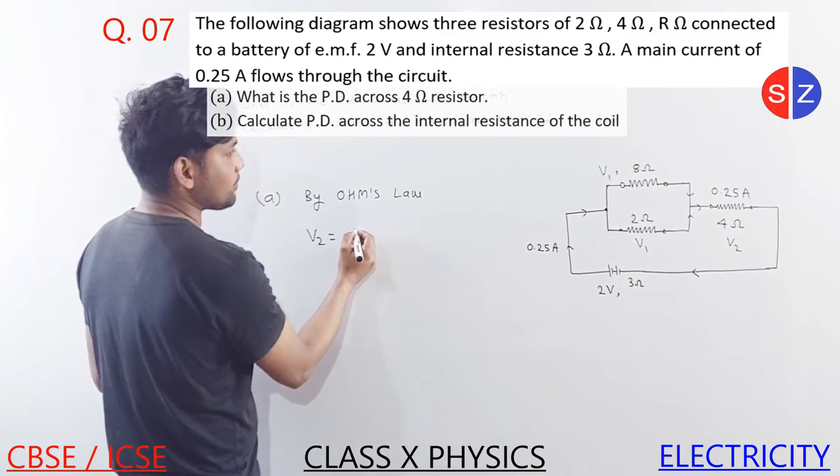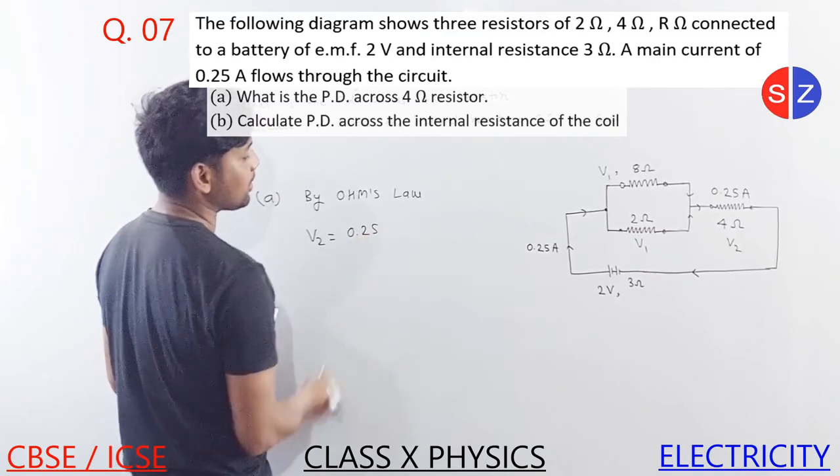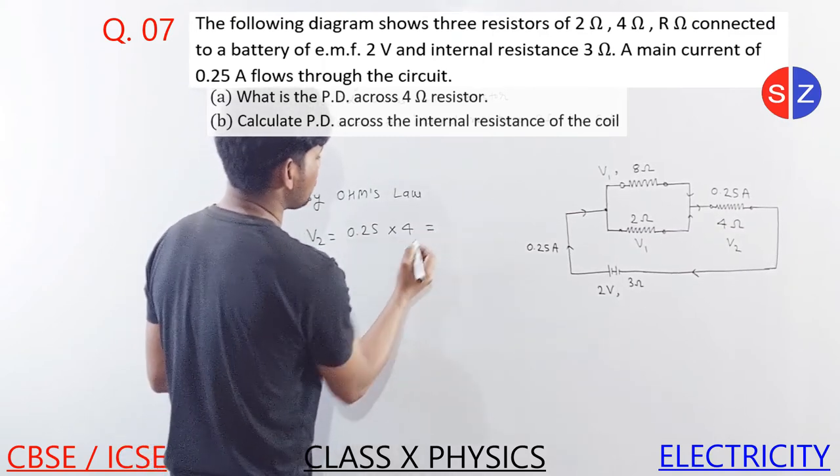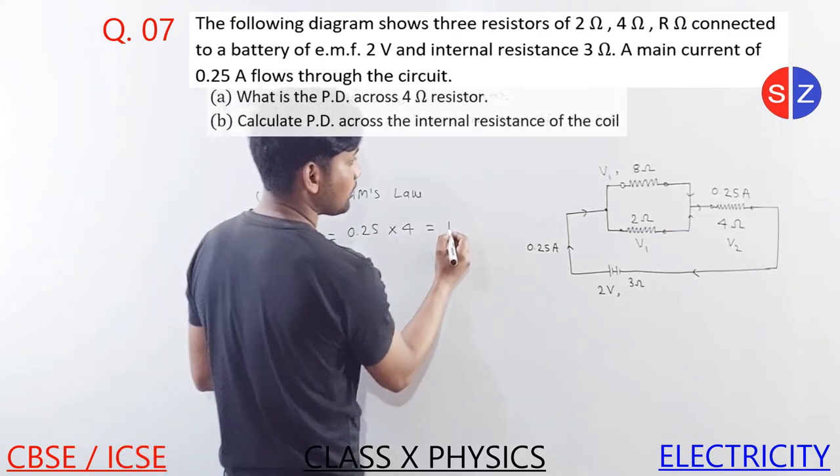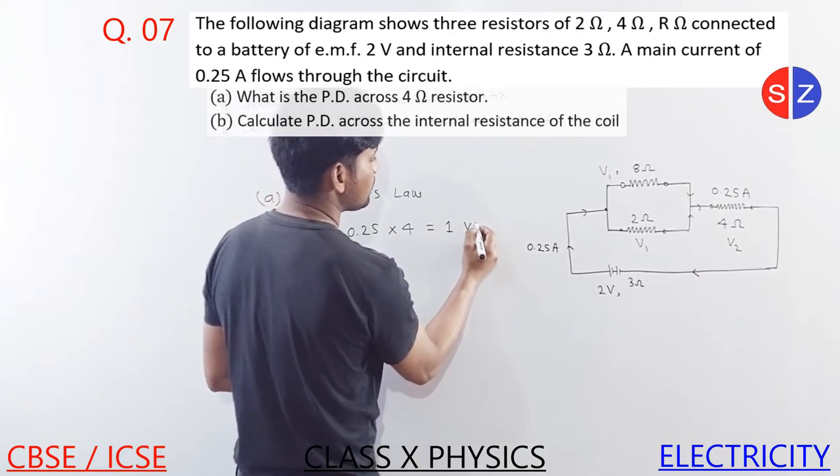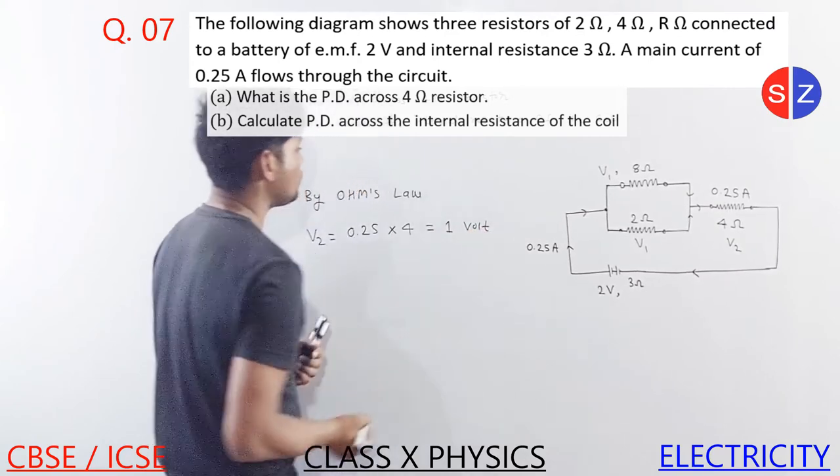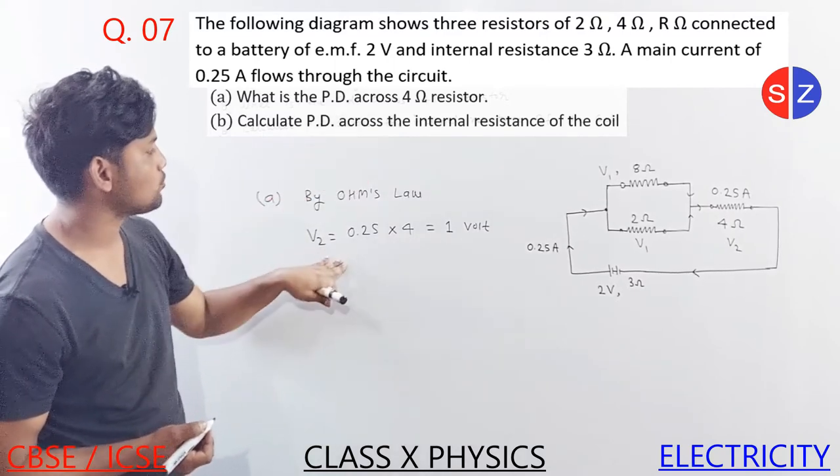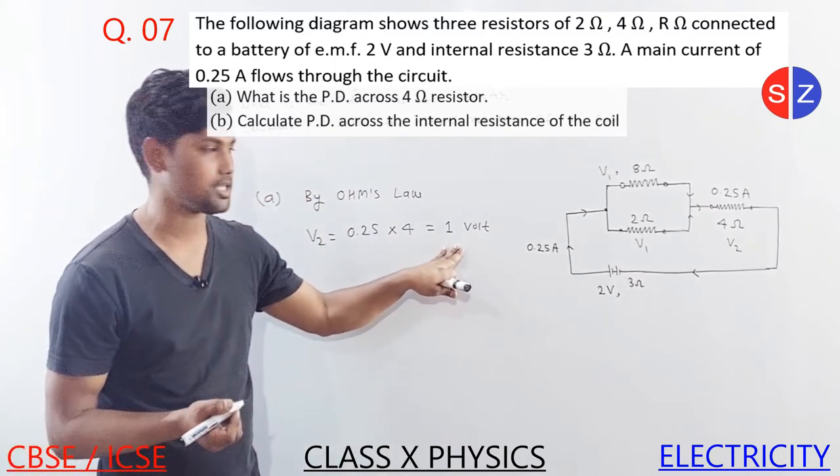The current here is 0.25, and the resistance is 4. If we solve this and multiply it, we get 1 volt. Correct? So we had to find the PD across the 4 ohm resistor - this is 1 volt.